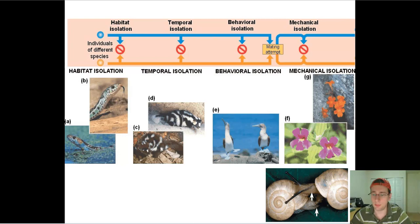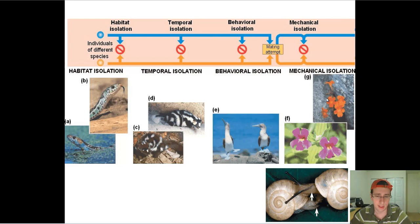There's also mechanical isolation, and that's when there's enough variation between two species which makes it impossible for them to cross even if attempted. For example, these two types of flowers cannot cross with each other because they have different kinds of pollen and different pollinators. Each flower has a different color, attracting a different kind of insect to pollinate them. They also have different pollen, and even if pollen from one lands on the other, they will not successfully cross.